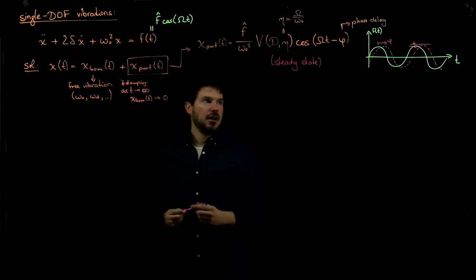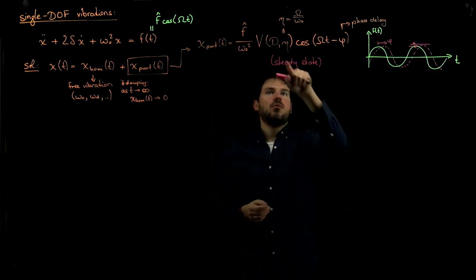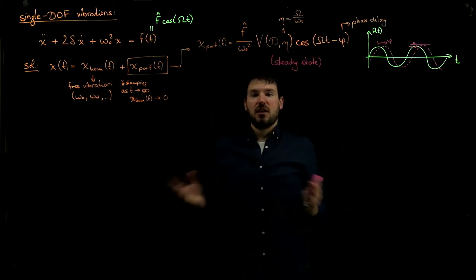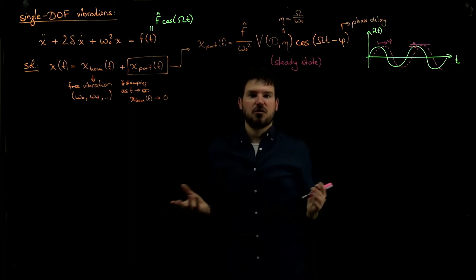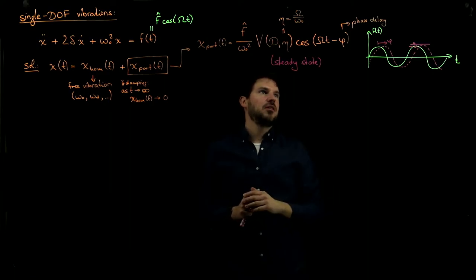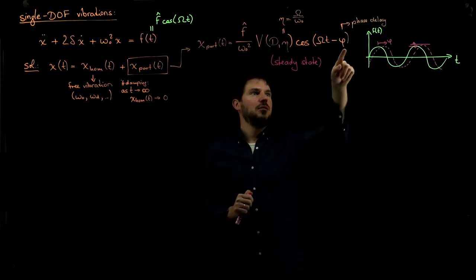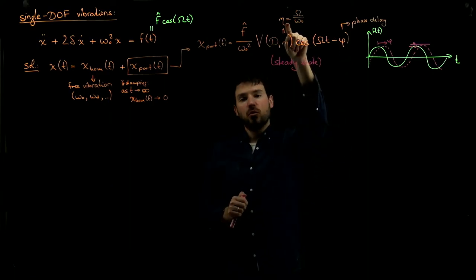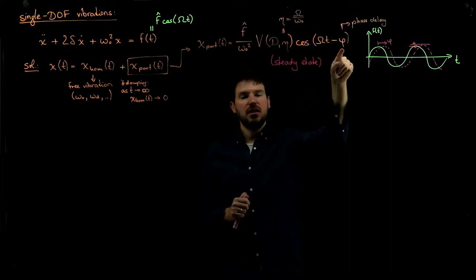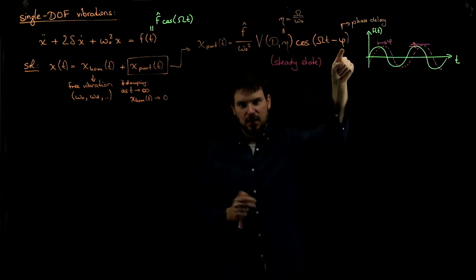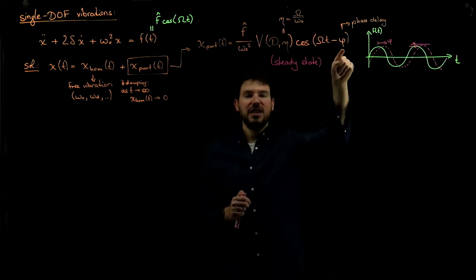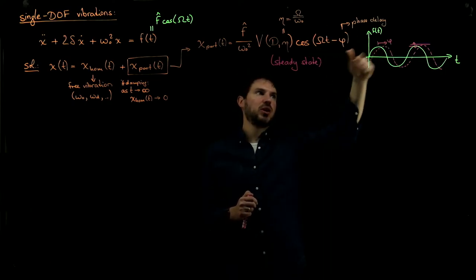Both the magnification and the phase delay have been calculated — you can find them in the formula collection. One general thing we discussed: namely, if we are below resonance, that is below eta equals 1, then phi is less than pi over 2, which means we are in phase.